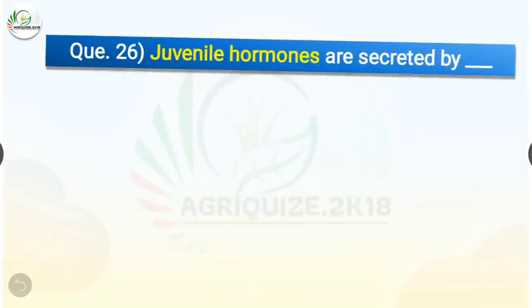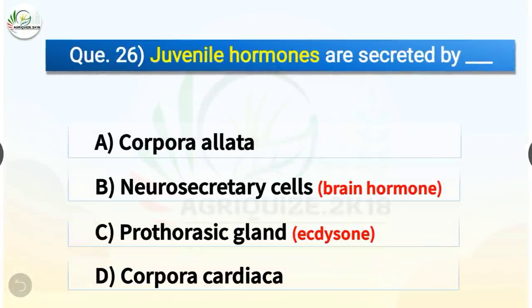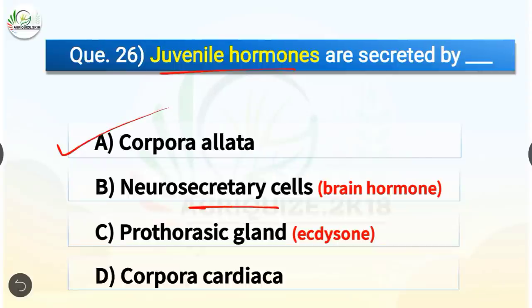Question number 26. Juvenile hormones are secreted by which gland? The options are corpora allata, neurosecretory cells, prothoracic gland, or corpora cardiaca. The correct answer is option A, corpora allata. Juvenile hormones are secreted by corpora allata, whereas neurosecretory cells secrete the brain hormone, and ecdysone is secreted by prothoracic glands.